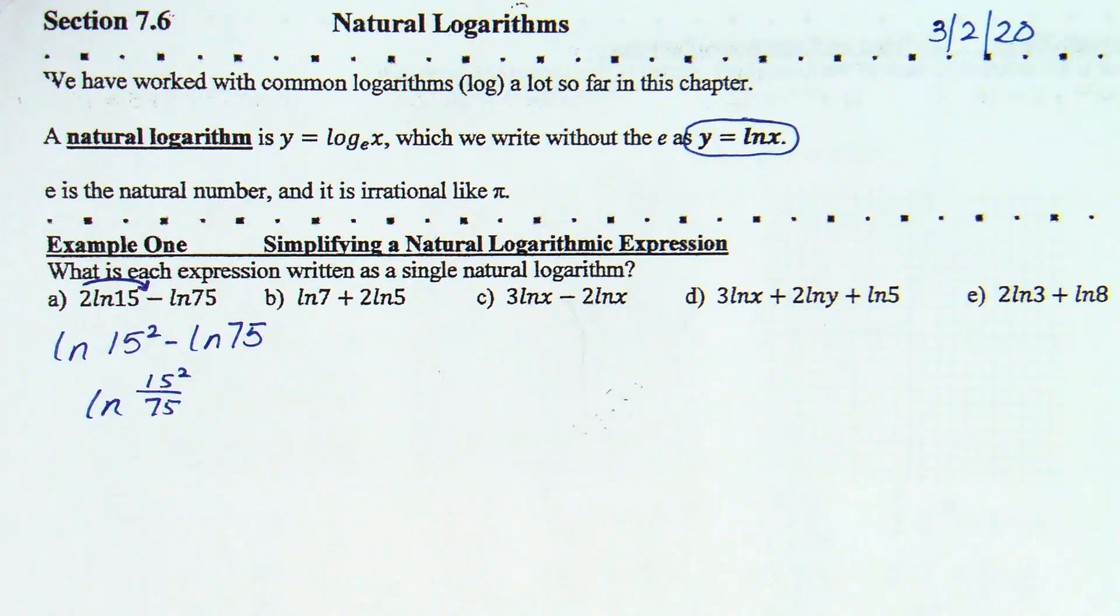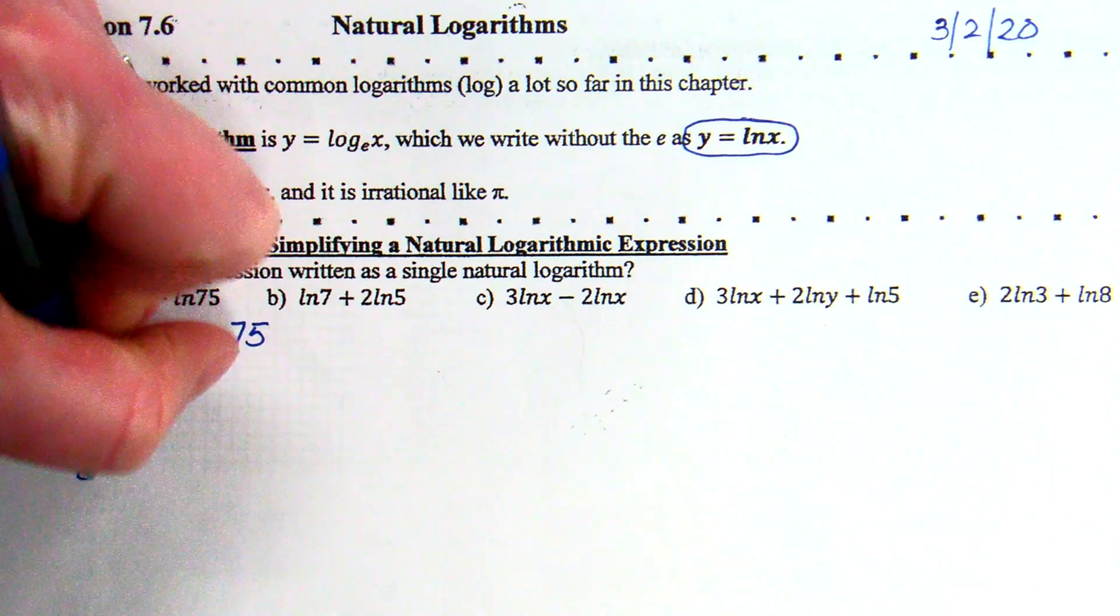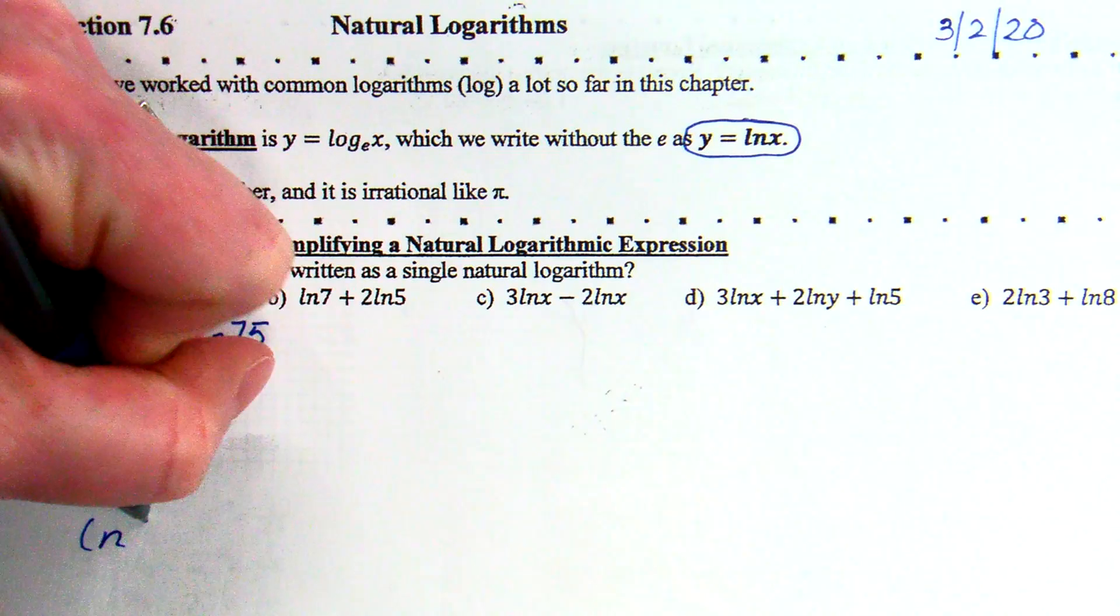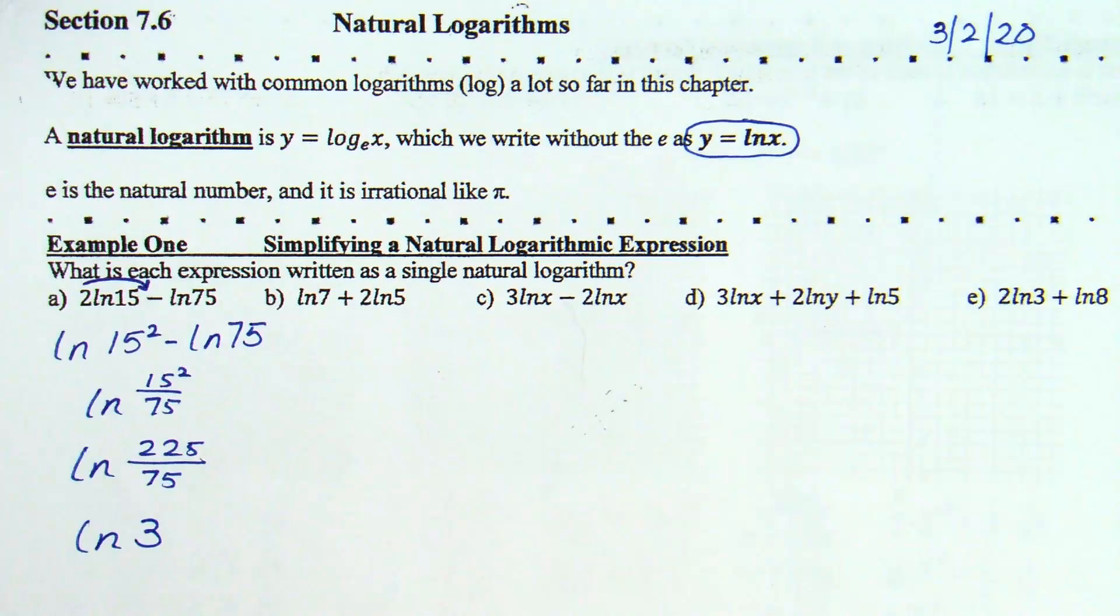What kind of math do you do here? 15 squared is... So, now, I have natural log of 225 over 75. 225 divided by 75 is 3. So, natural log of 3.